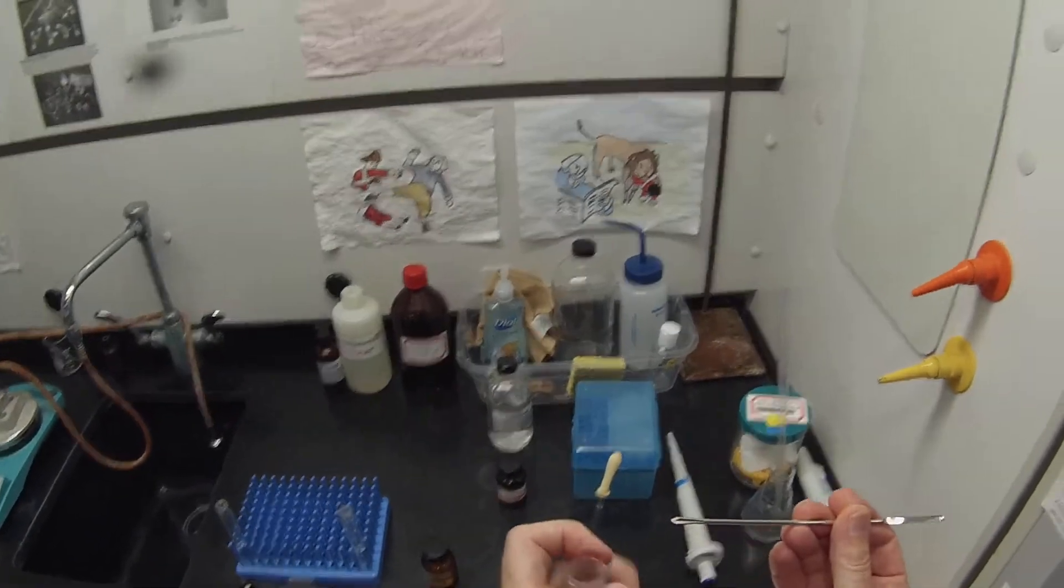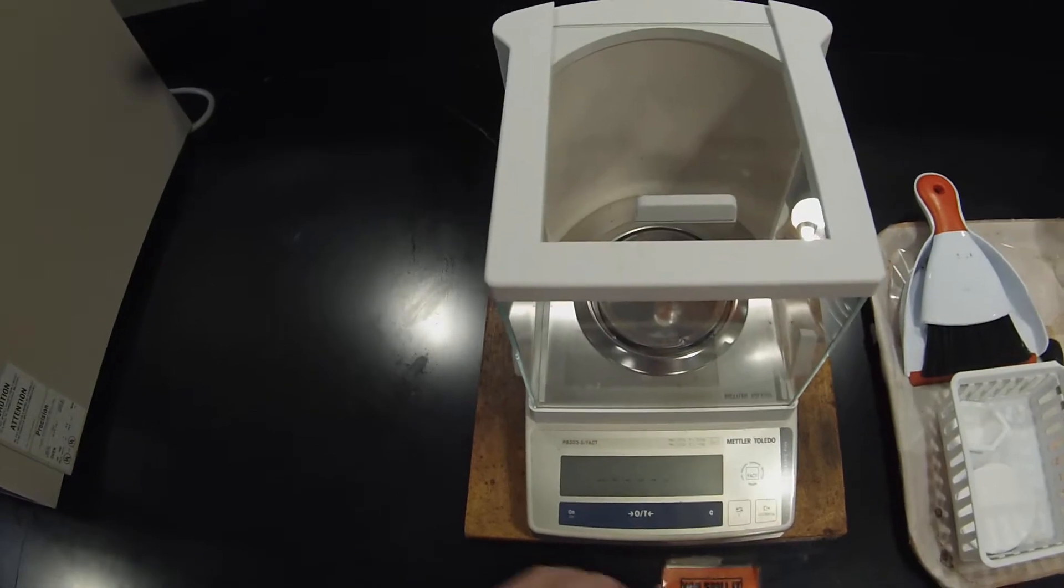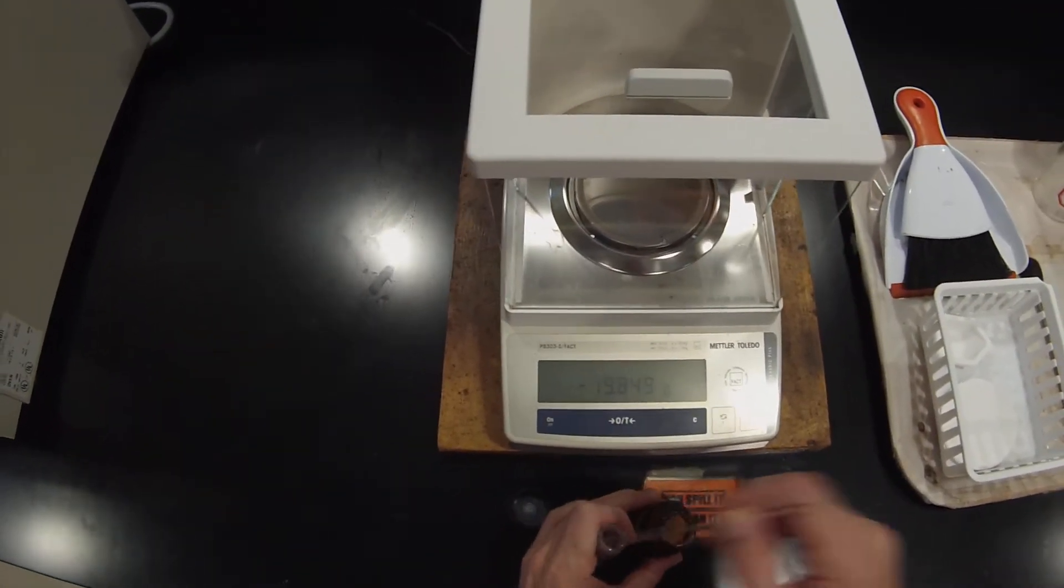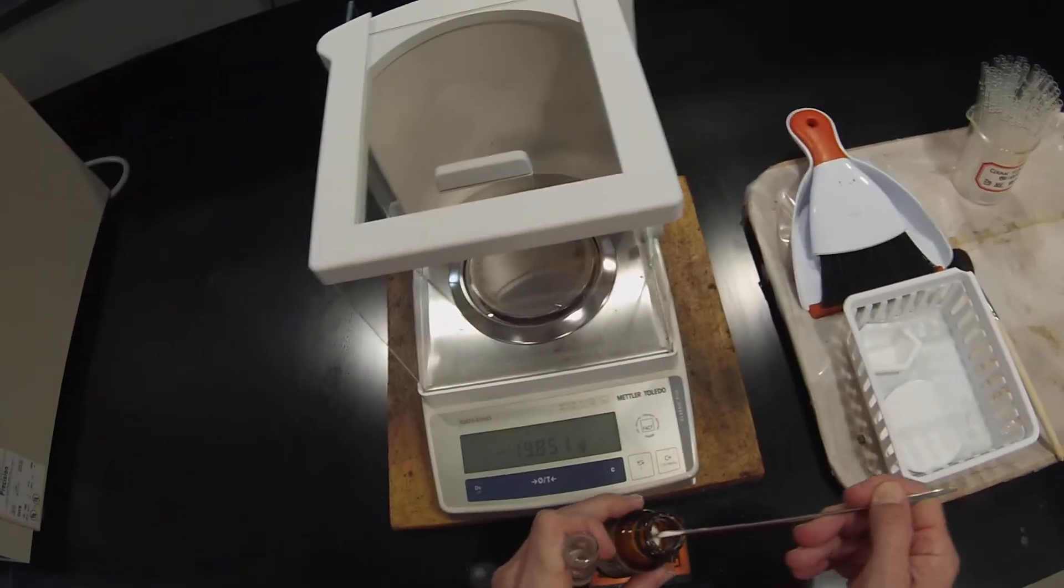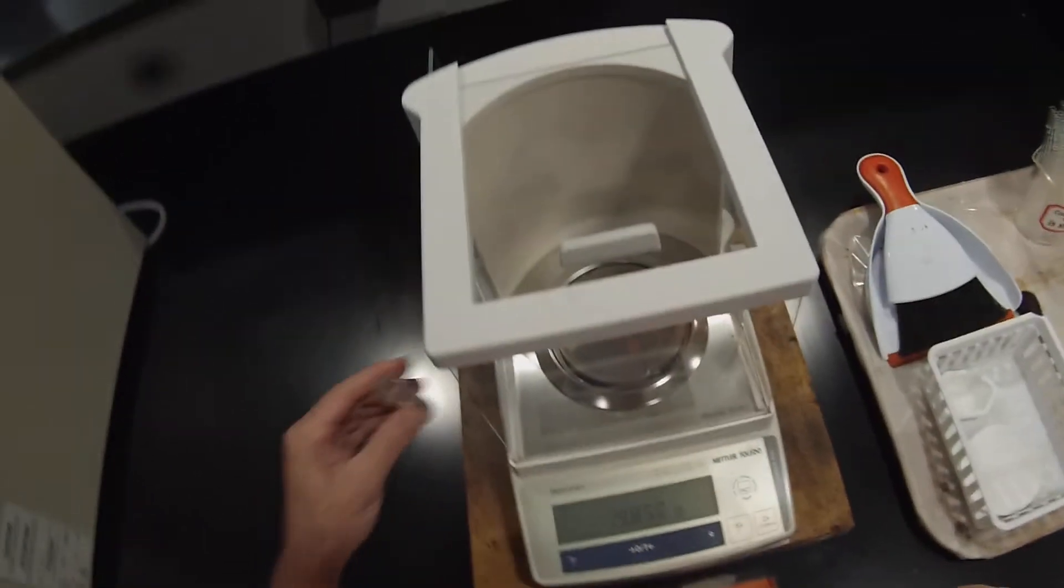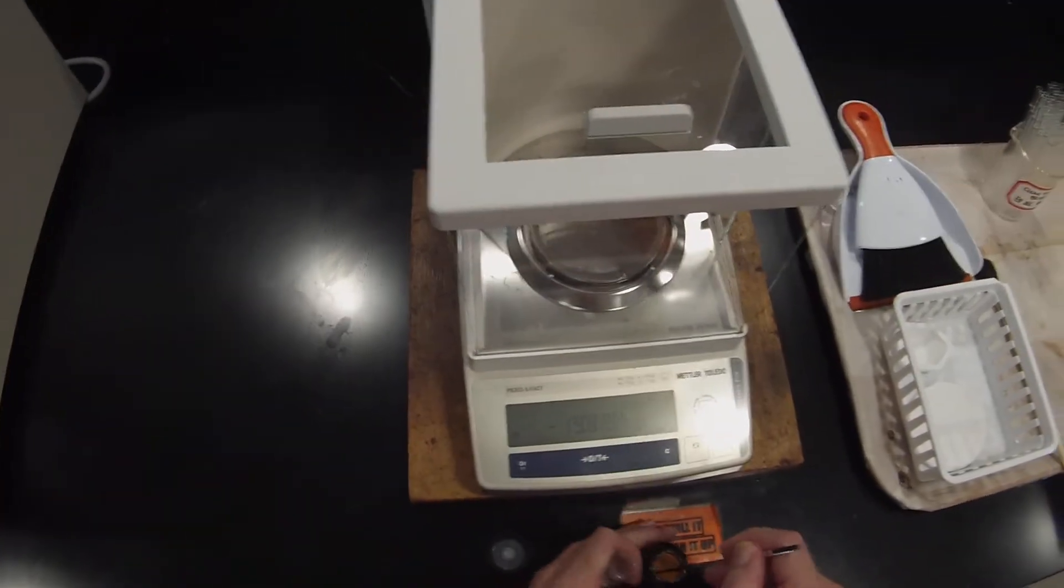So I need to measure out 0.2 grams. And the best thing for that is going to be this little V-shaped one of sodium carbonate. So we'll stick our vial in there and tare it. And one tick was about 0.01.